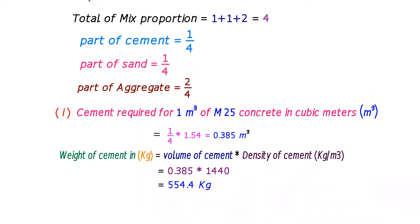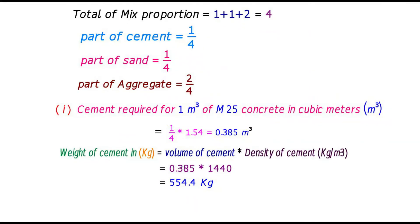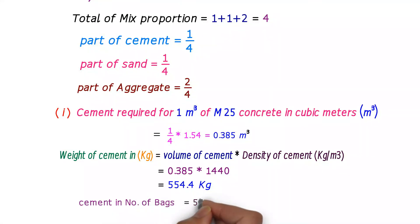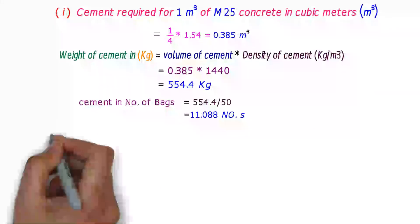We are going to calculate the number of cement bags for 554.4 kg of cement. Each cement bag contains 50 kg of cement. The number of cement bags is equal to 554.4 divided by 50, which equals 11.088. We can round it off to 12 bags.